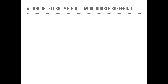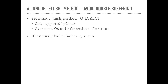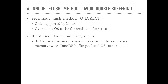InnoDB flush method: set innodb_flush_method to O_DIRECT to avoid double buffering. The only case you should not use O_DIRECT is when it is not supported by your operating system. But if you are on Linux, use O_DIRECT to enable DirectIO. DirectIO means that InnoDB's read and write calls are bypassing OS cache and going directly to the I/O scheduler to be sent to the disks. Without DirectIO, double buffering happens because all database changes are first written to OS cache and then synced to disk, so you end up with the same data in InnoDB buffer pool and in OS cache — potentially losing up to almost 50% of memory. Do set innodb_flush_method equals O_DIRECT.